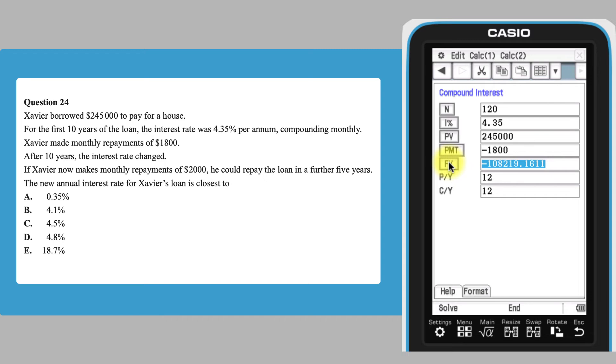To answer the question about the changed interest rate, we should consider the remaining 5 years as a new loan with a present value of $108,219. To do this, make sure the present value is selected.